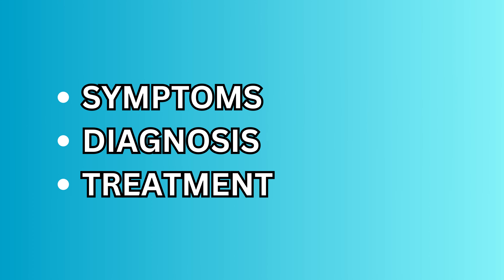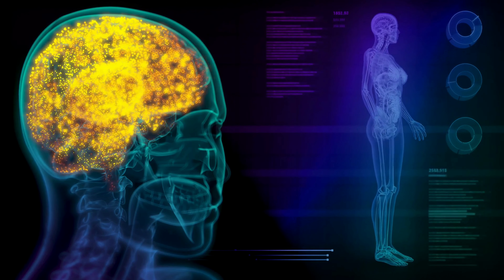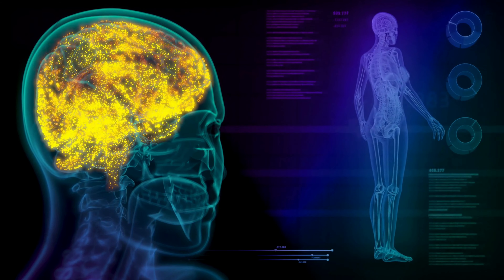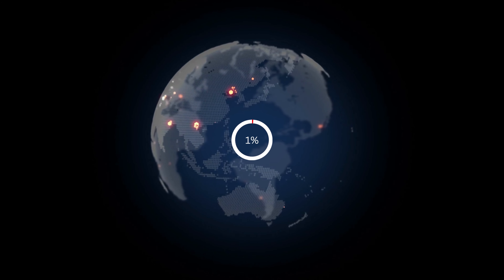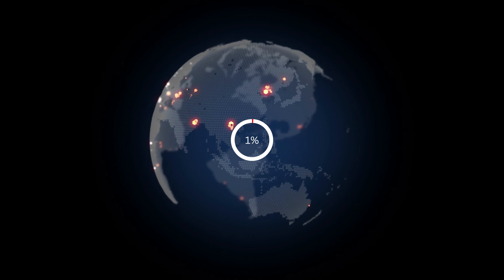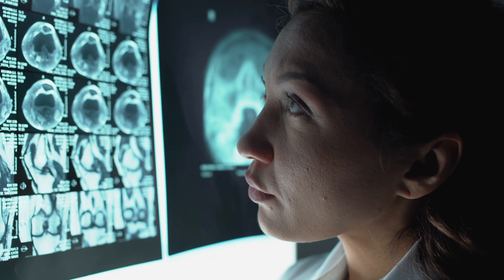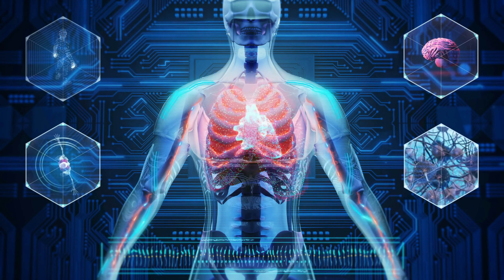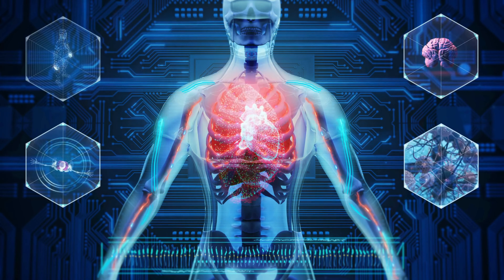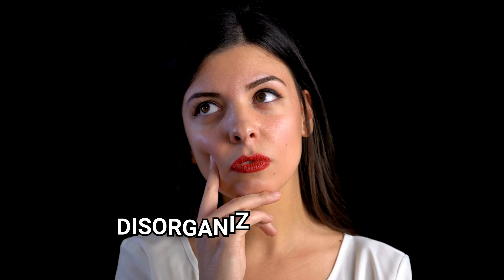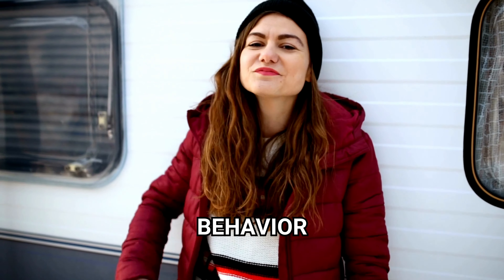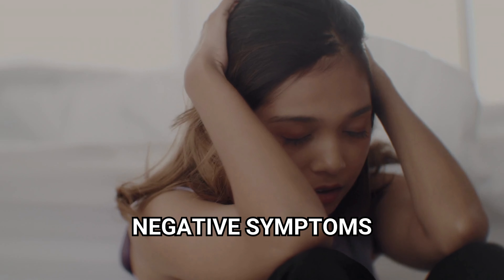Understanding Schizophrenia: Symptoms, Diagnosis, and Treatment. Schizophrenia is a severe mental disorder that affects approximately 1% of the population worldwide. It is a complex illness that involves a range of symptoms, including hallucinations, delusions, disorganized thinking and behavior, and negative symptoms.